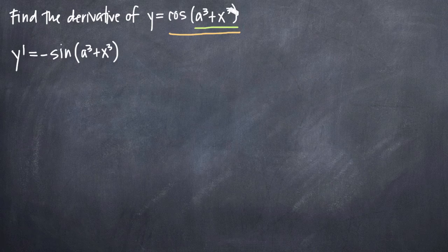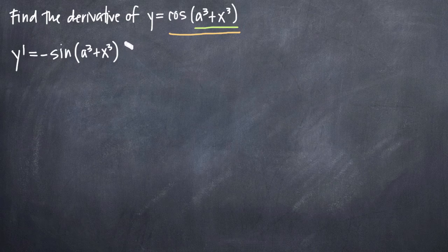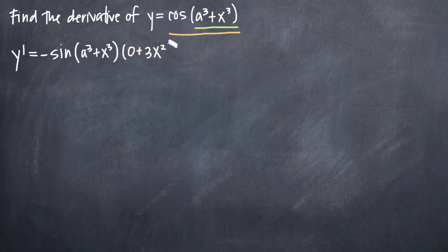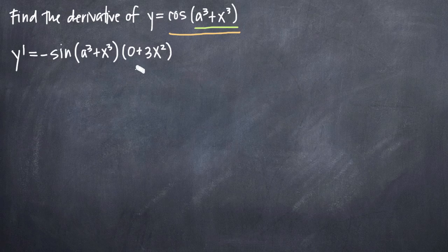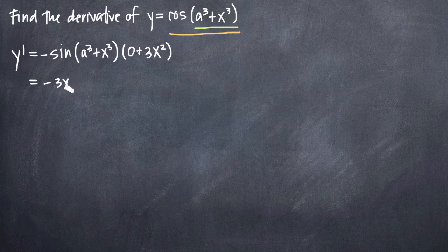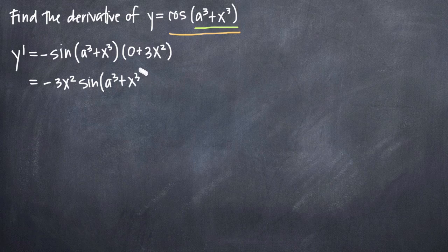The derivative of x cubed we can take using the power rule, which tells us to bring the exponent down in front and subtract 1 from the exponent. So we multiply by the quantity 0 for the a cubed term, plus 3x squared for the x cubed term — since 3 minus 1 is 2. That's how power rule gives us the derivative of x cubed. We've now multiplied by the derivative of the inside function and officially applied chain rule. Simplifying by moving 3x squared to the front, our final answer is negative 3x squared times sine of the quantity a cubed plus x cubed.